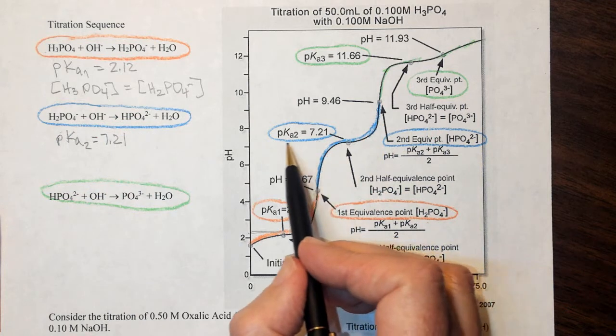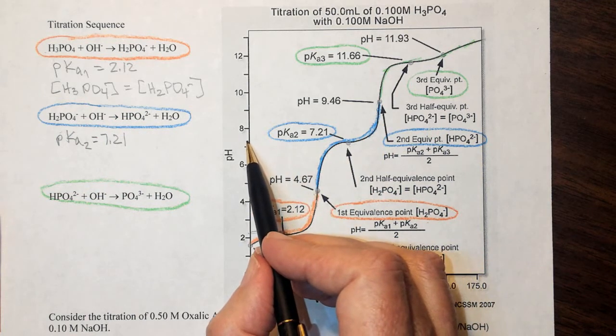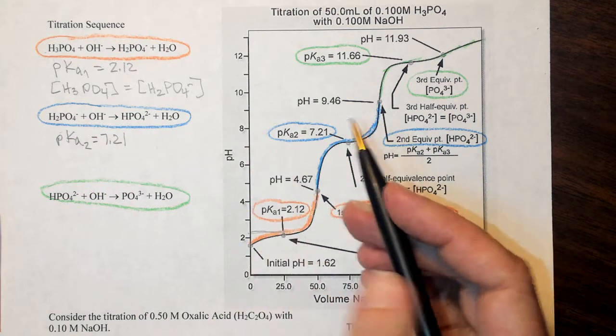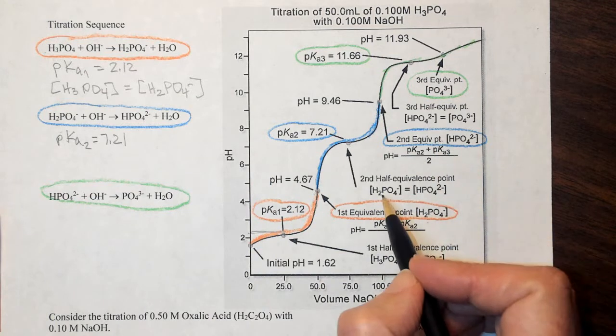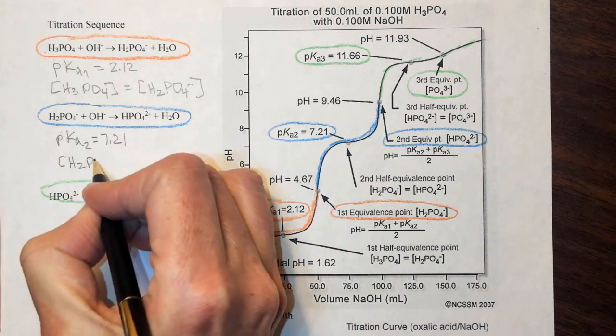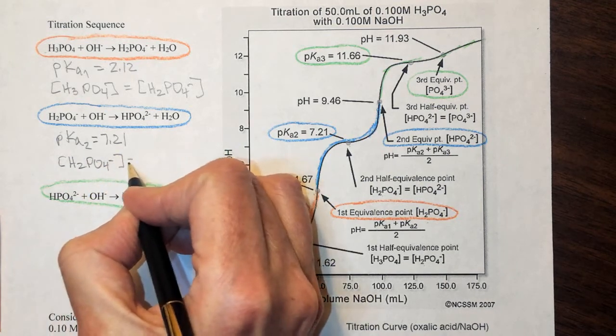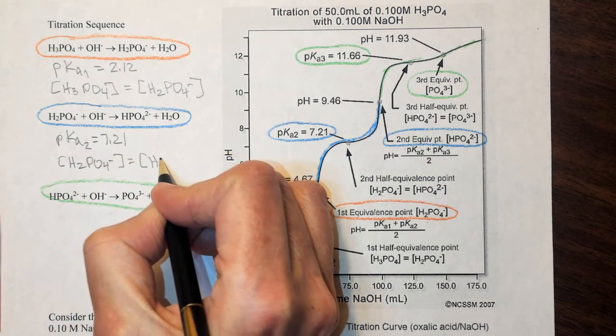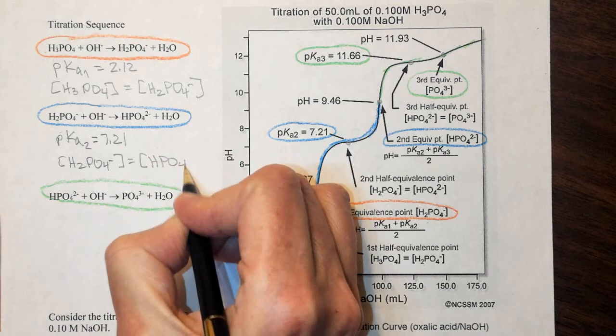And again, we take that by just running straight across over to the pH graph or pH measurements. And at this point, H2PO4 minus is exactly equal to our concentration of HPO4 2 minus.